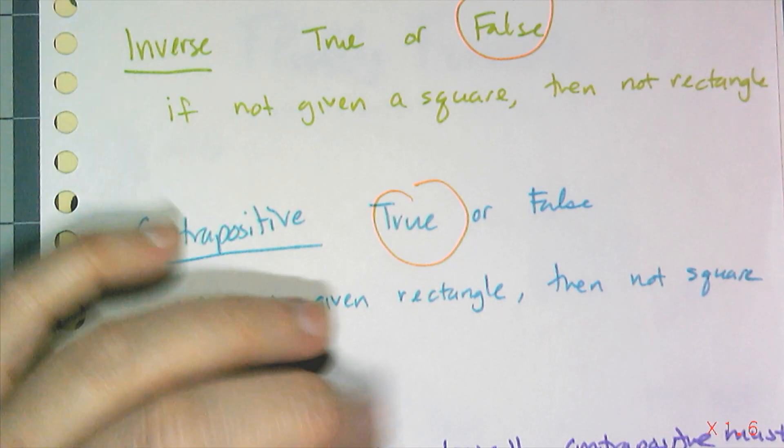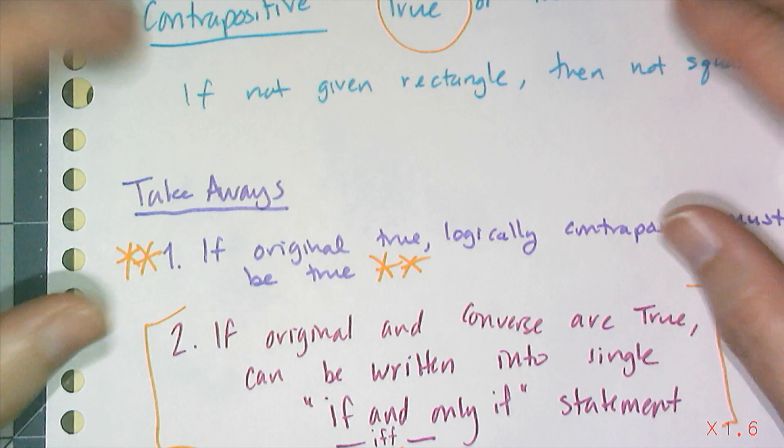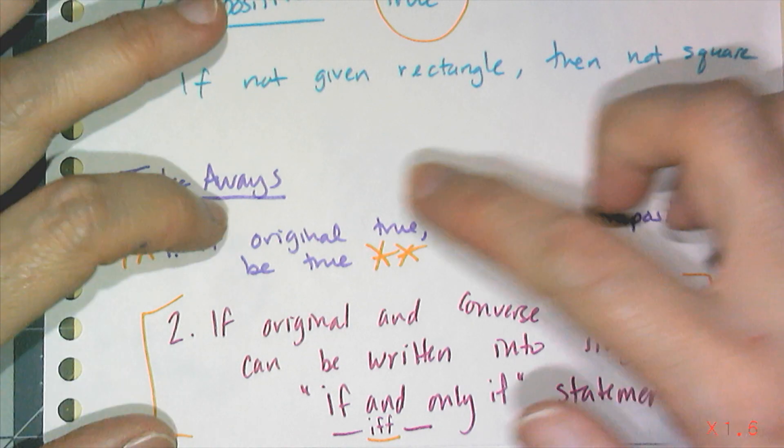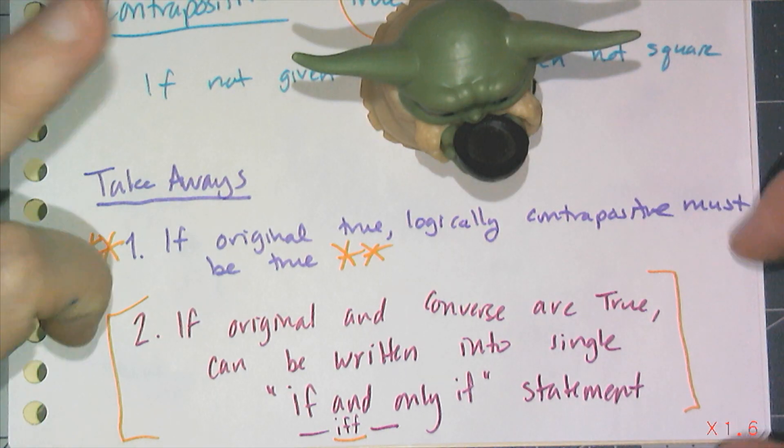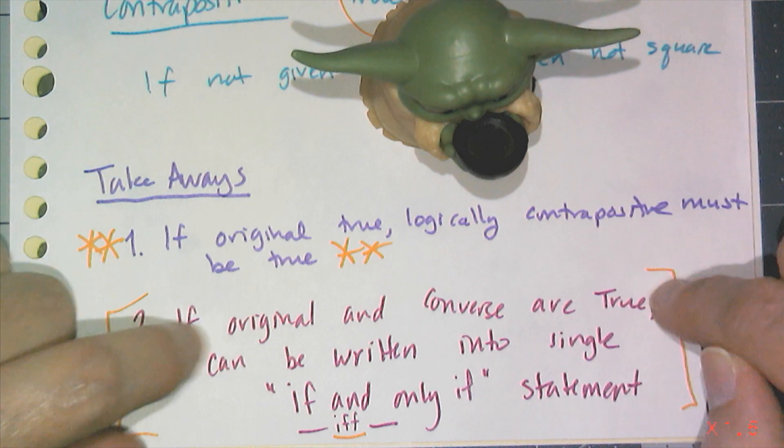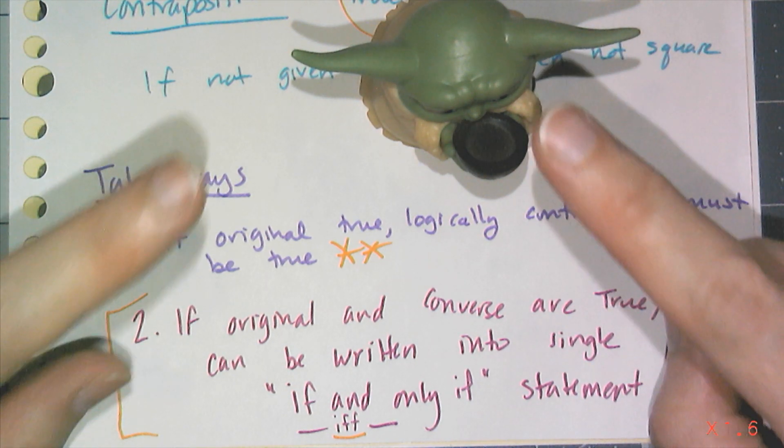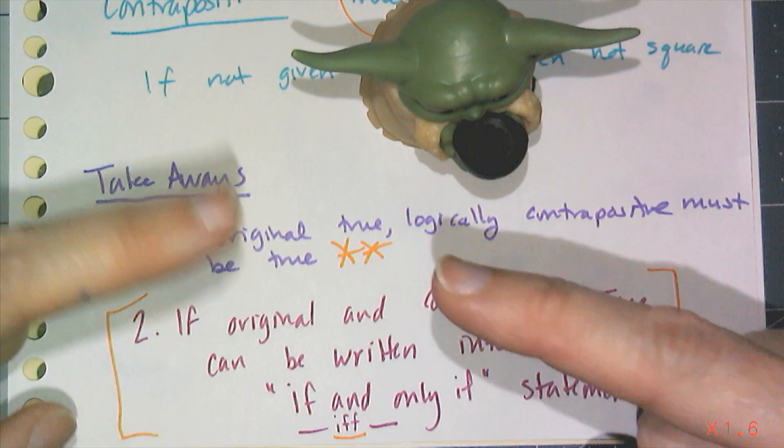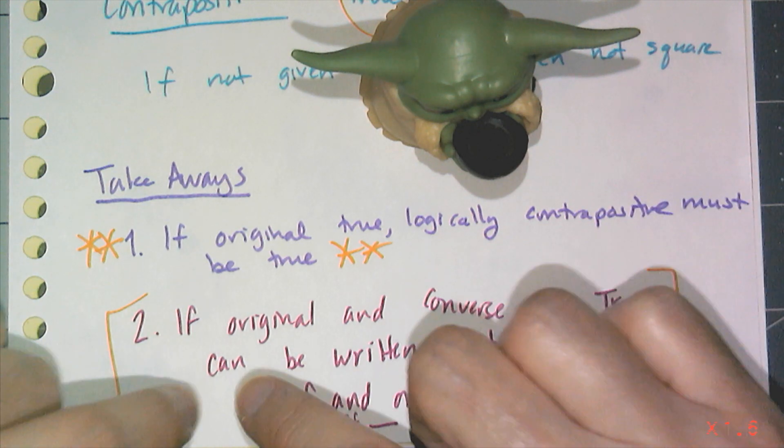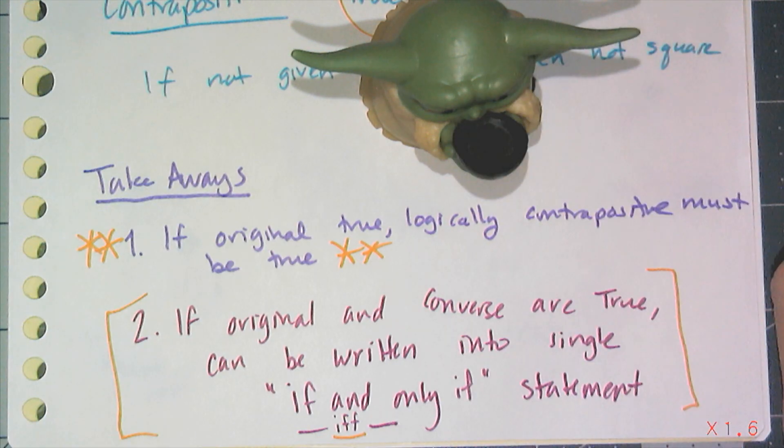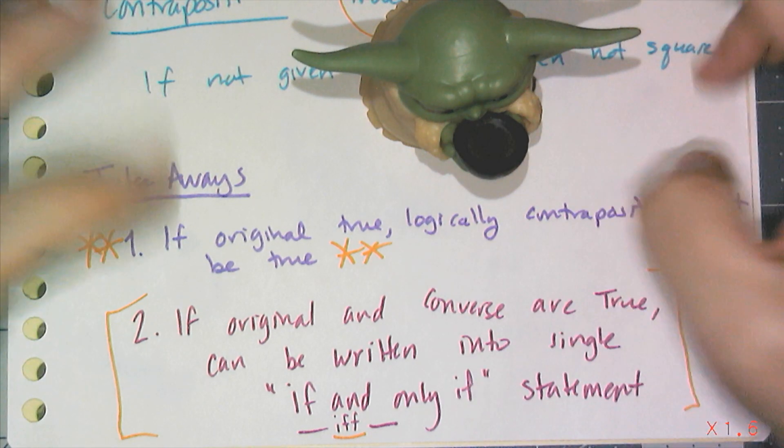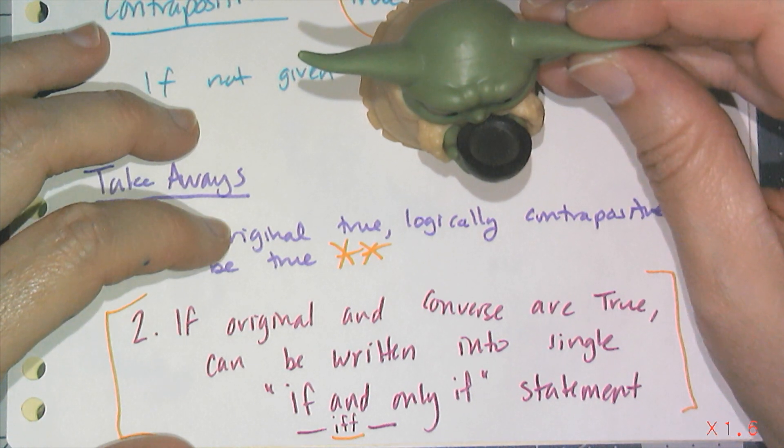Now, I'm going to stop this video by talking about a couple takeaways from this conditional statements and if-thens. So this is the first one. If the original statement is true, if the original if-then statement is true, logically the contrapositive must also be true. And the second thing is that if the original statement and the converse are both true, I can rewrite those two conditional statements into a single conditional statement using the phrase if and only if. So something if and only if something else means the original statement and the converse are both true, works both ways. And if I'm really lazy, sometimes you will see me write this if and only if, but I will write it as IFF because that's like the shorthand version when we have a conjecture that's true along with its converse.